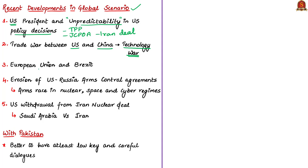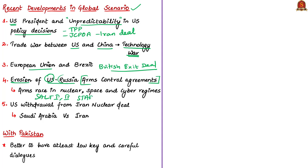If you take the European Union, they are more preoccupied with the Brexit deal — the exit of Britain from the European Union. And recently we could see more erosion of US-Russia arms control agreements. There are several arms control treaties between the United States and Russia such as SALT-1, SALT-2, START-1, START-2, SORT treaty, and the INF treaty — Intermediate Range Nuclear Forces treaty. The author says that recently we have seen several violations in these arms control treaties, and a new invigorated arms race is happening in the nuclear space and also in cyber regimes.